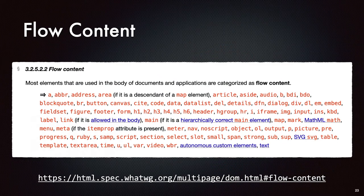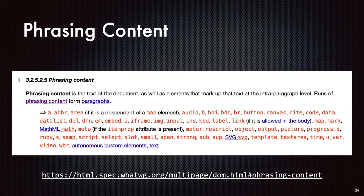There's a long list of flow content — anchor tags, abbreviations, all the various headers, bold, breaks, and a whole lot more. And there are certain metadata elements that can only live in the head. We've also got phrasing content, which is a subset of flow content. Phrasing content is the text of the document as well as elements that mark up text at an intra-paragraph level. Runs of phrasing content form paragraphs — this is the content of the web page that you'll see and interact with.